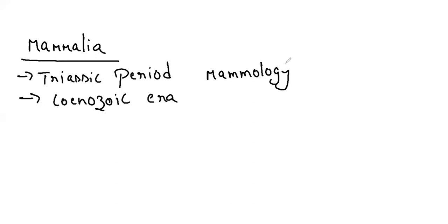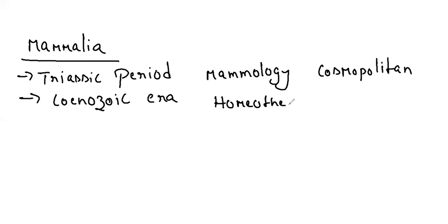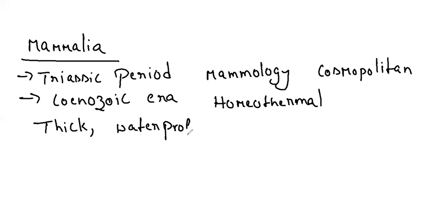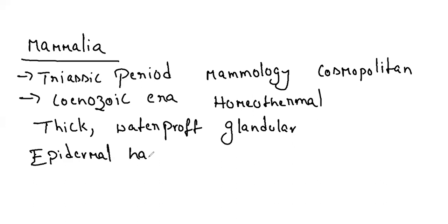Members of this class are cosmopolitan, homeothermal, and endothermic. Skin of mammals is thick, waterproof, and glandular. Epidermal hairs are present, which act as a thermoresistant layer helping in maintaining internal body temperature. In aquatic mammals, hair are lost, and homeothermic condition is maintained by a layer of subcutaneous fat — such as for dolphins and blue whales.